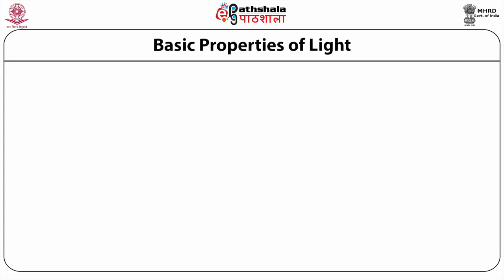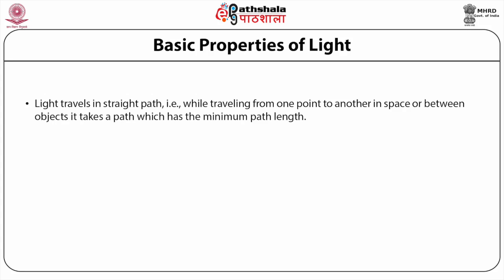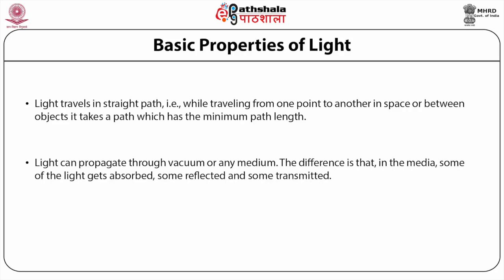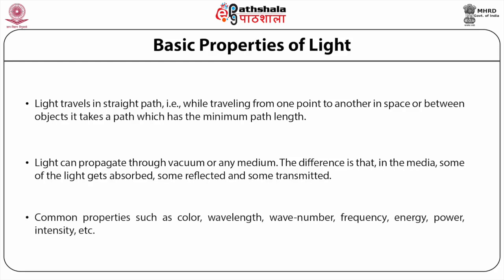Here we summarize the basic properties of light. The first and most fundamental is that light travels in a straight path — while traveling from one point to another it takes a path of minimum length. Second, light can propagate through vacuum or any medium; unlike sound, it does not need a medium to propagate. In media, some light gets absorbed, some reflected, and some transmitted. Other common properties of light include color, wavelength, wave number, frequency, energy, power, and intensity.